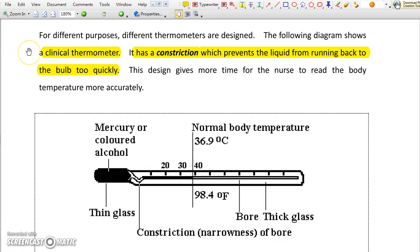For a clinical thermometer which is used to measure body temperature, it has a construction which prevents the liquid from running back to the bulb too quickly so that it gives time for the nurse to read the body temperature more accurately.